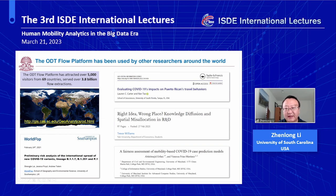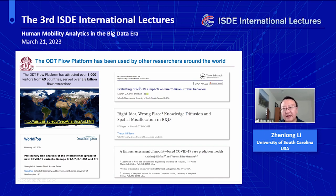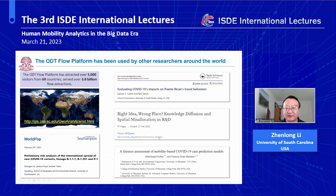The platform has been used by researchers around the world. It has attracted over 5,000 visitors from 69 countries and served over 3.8 billion flow extractions so far. A number of researchers have been using this data directly in their publications, showing that it is useful for a wide range of studies.